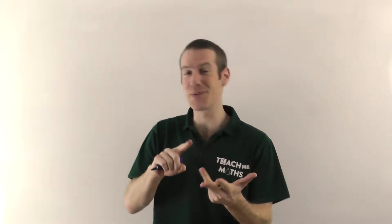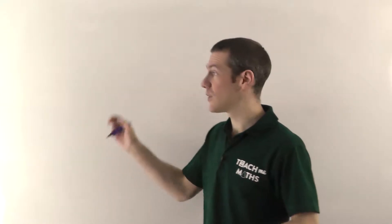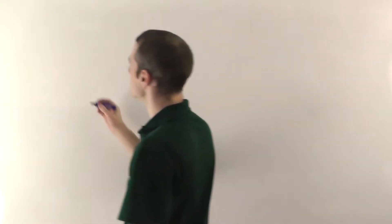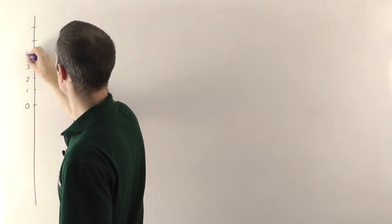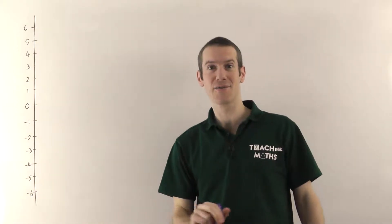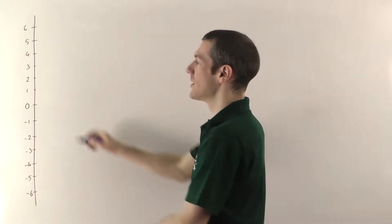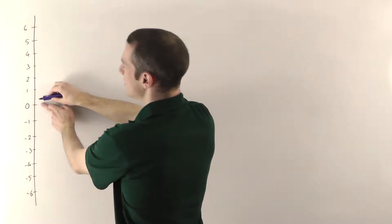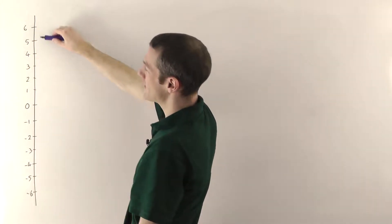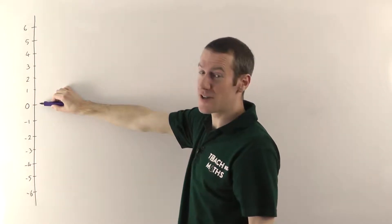A lot of the time when people struggle with algebra it's because they're struggling with negative numbers. So if you can master your negative numbers the algebra will be much easier. There are essentially four things you can do with negative numbers: add, subtract, multiply, and divide. The first thing we're going to need is a number line. You can think of it a bit like a thermometer.